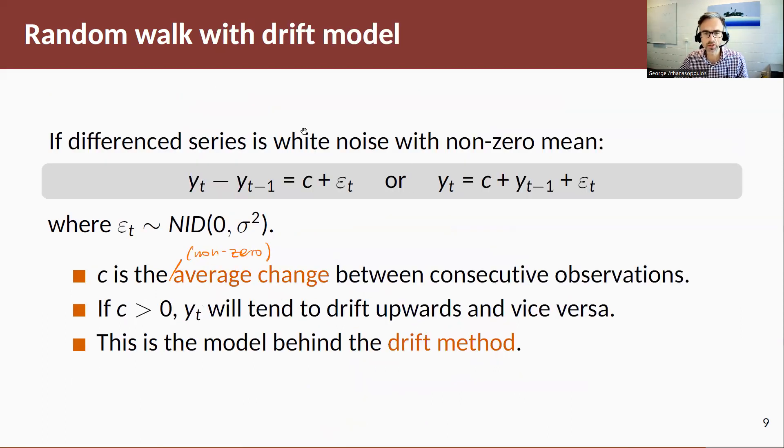Now if the difference time series is white noise with a non-zero mean, hence if we take yt minus yt minus one and then we have some constant c, rearranging this we get what we call the random walk with drift model. This c here is the average change between consecutive observations. If c is greater than zero, yt will tend to drift upwards and vice versa. If c is negative, it will tend to drift downwards. This model now has a stochastic trend due to the random walk but also a deterministic trend due to the constant drift factor.